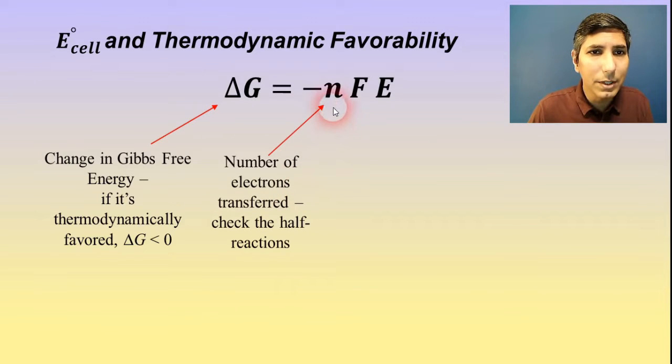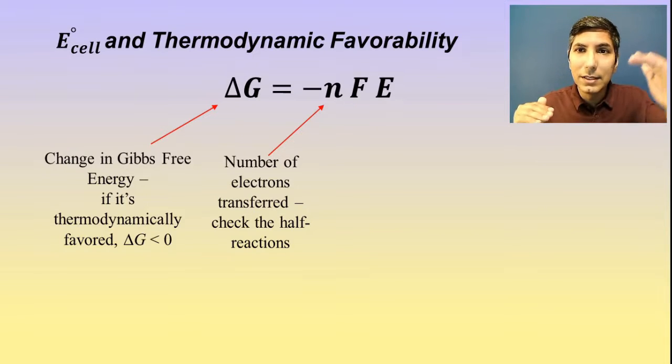Now the n is the number of electrons that are transferred. Whenever we wrote these balanced equations in the last couple of videos, we had to flip around one of those half reactions and add them together, and however many electrons were canceled out on the left side and right side, that's the number that goes in there for n.